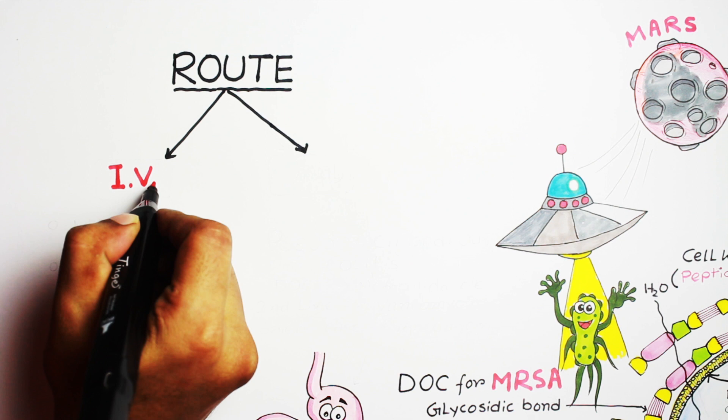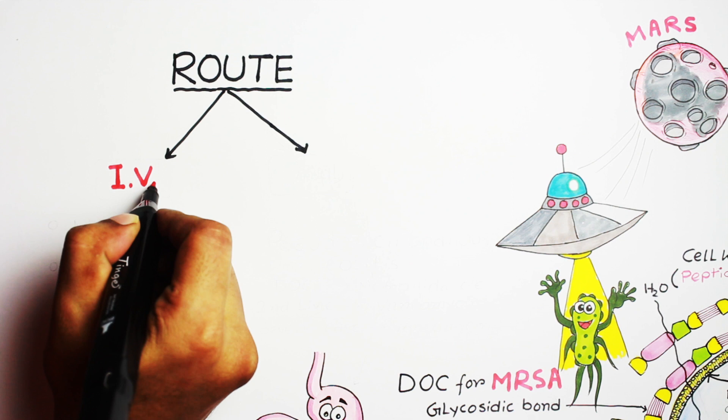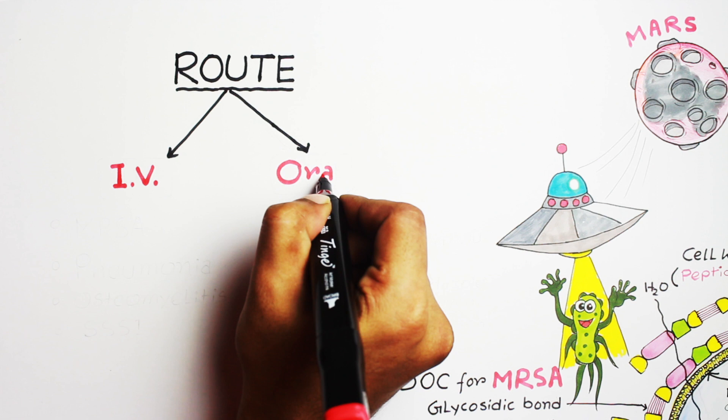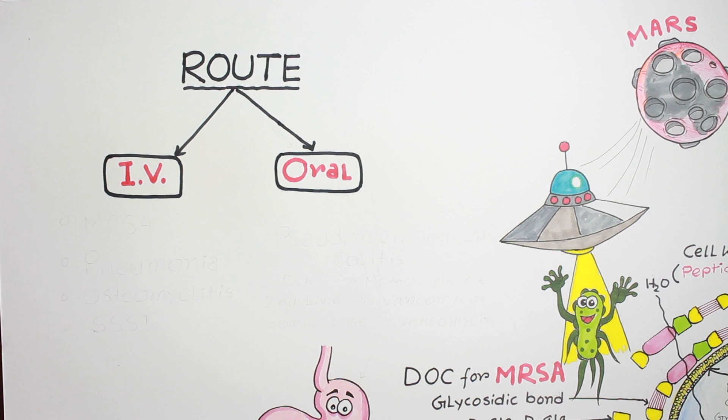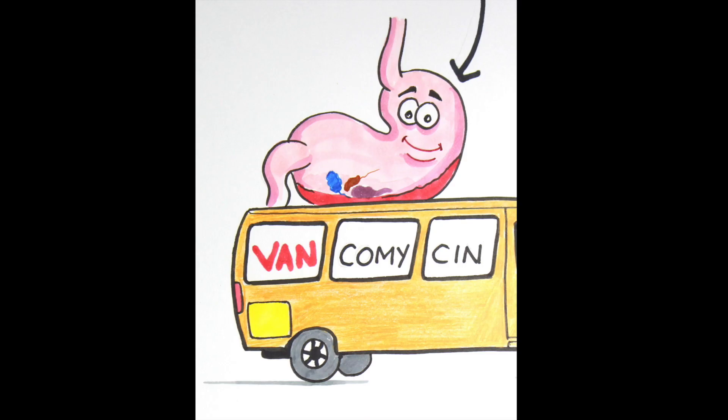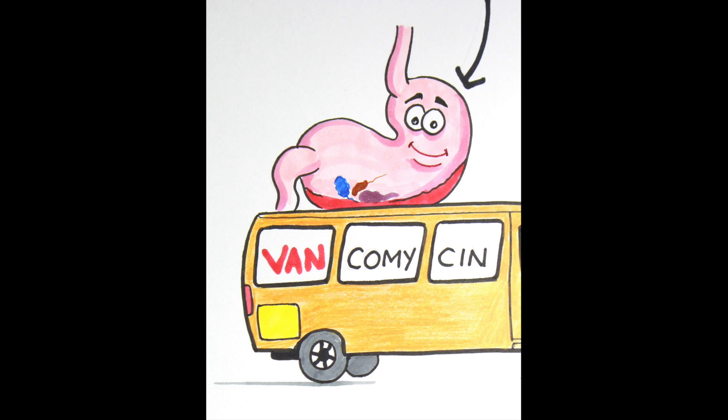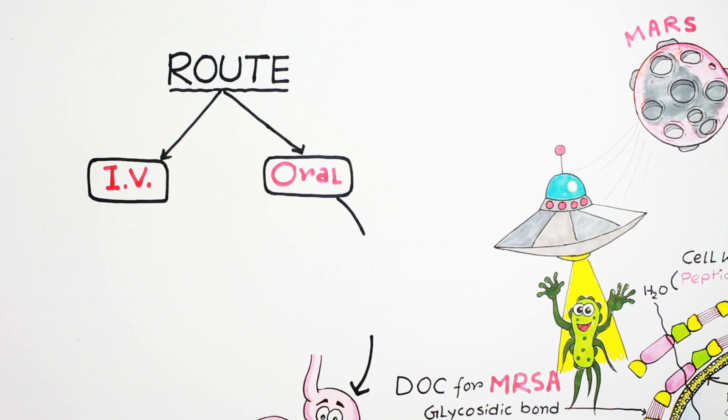Now let's discuss route of administration. Vancomycin is mostly administered through intravenous route because it is poorly absorbed from GIT. So it is very logical that as it is not absorbed well from GIT, it must be effective on gastrointestinal bacteria or gastrointestinal flora. Here I have drawn GIT - look at the expression, it is happy because it is well protected by vancomycin. Another important point: vancomycin is used orally for the treatment of pseudomembranous colitis. It is the second-line drug for pseudomembranous colitis.